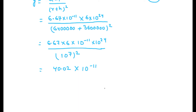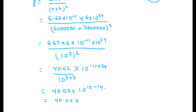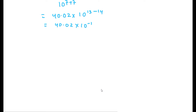Since the base is the same, we add powers: 10⁻¹¹ plus 10²⁴ gives 10¹³ in the numerator. The denominator is 10¹⁴. Multiplying 6.67 into 6 gives 40.02. So we get 40.02 into 10¹³ divided by 10¹⁴, which equals 40.02 into 10⁻¹.